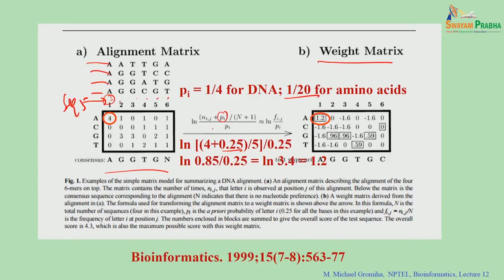Now they use Nij: Nij = 4 + 0.25 (probability), divided by 4 + 1 = 5. So the weight score for a position with count 4 is: ln((4 + 0.25) / 5) normalized by Pi (= 0.25). The calculation gives: (4.25/5) / 0.25 = 0.85/0.25 = 3.34, and ln(3.34) ≈ 1.2.